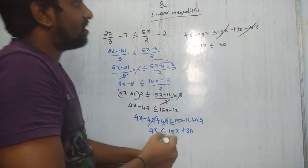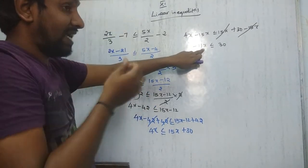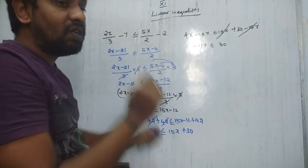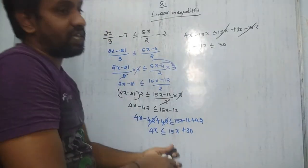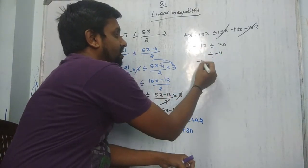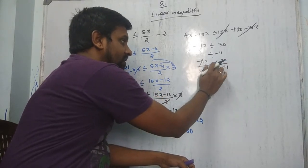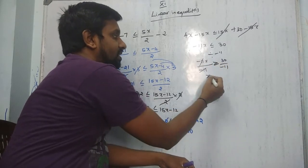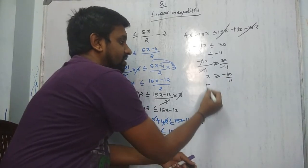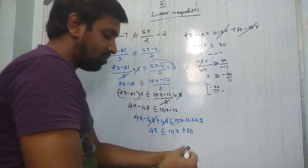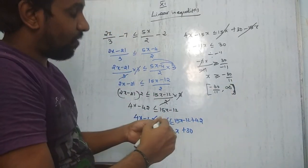We have -11x ≤ 30. To cancel -11, divide both sides by -11. Whenever you multiply or divide both sides by a negative number, the inequality symbol reverses. So we get x ≥ -30/11. On the number line, x is greater than or equal to -30/11, so we shade to the right of that point.